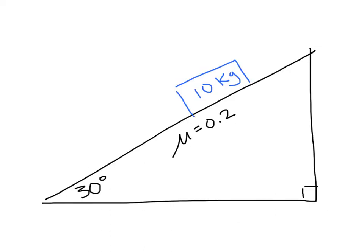Here's an example: 10 kilogram block, coefficient of friction, and an angle of 30 degrees. So gravity pulls straight down. We are going to break that into components that are perpendicular to the plane and parallel to the plane.